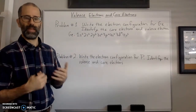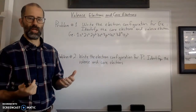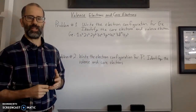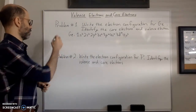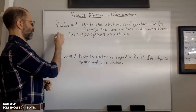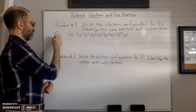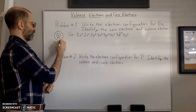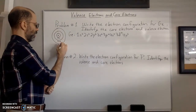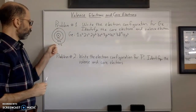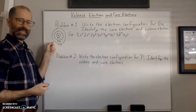When we're trying to figure out the valence electrons and the core electrons, we have to remind ourselves what valence electrons are. Valence electrons are those electrons in what's called the valence shell. The valence shell is the outermost shell — the outermost energy level. If we go back to our Bohr model, here's the nucleus, shell number one (n=1), then energy level two, energy level three, and so on.